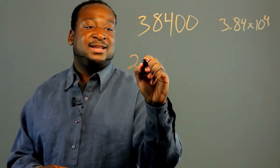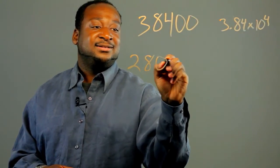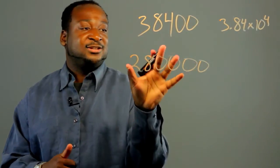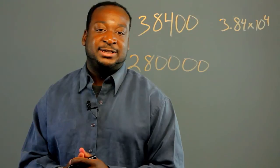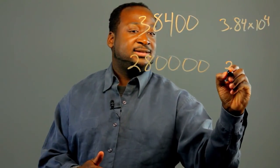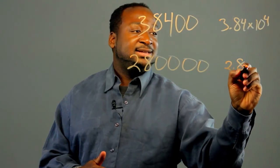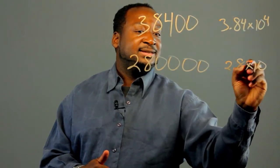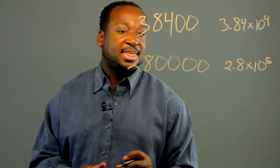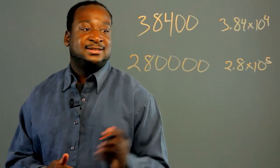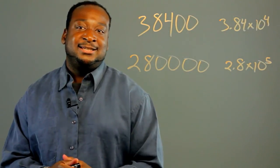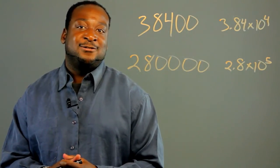And you can do this with other numbers like 280000. To shorten this, or to put it in scientific notation, you would just write 2.8 times 10 to the 5. This is some examples of scientific notation, and it's a good thing to introduce to third grade students.